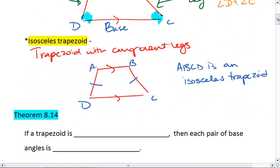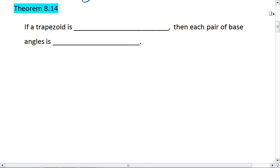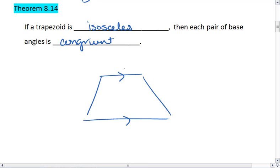Which brings us to theorem 8.14. If a trapezoid is isosceles, then each pair of base angles is congruent. So if we have our trapezoid, and it is an isosceles trapezoid, then A is congruent to B and D is congruent to C. This must be the case.